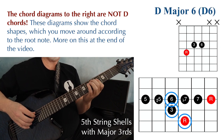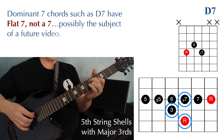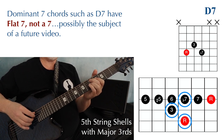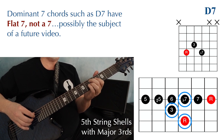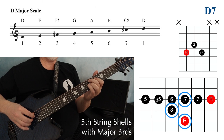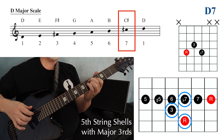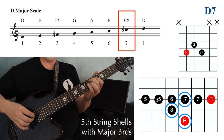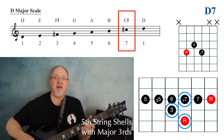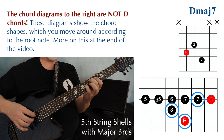Moving that note again gives a major sixth chord — labeled D6. Moving to the flat seven gives a dominant seventh chord, labeled D7. It might seem strange that a D7 chord has a flat seven in it, but we're relating these notes to the root as if the root were the start of a major scale. The seventh note of a D major scale is C sharp, but this note is C — so even though it's called a seventh chord, the seventh is a flat seven. Moving that note one fret higher gives a D major seven.